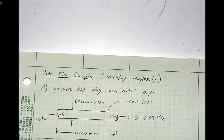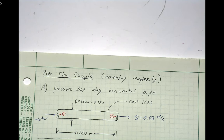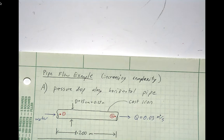This pipe flow example will be a five-step problem in increasing complexity. We're going to start as basic as possible here for the types of pipe flow analysis that we do, leading into more complicated cases after the initial steps. The first part is just to determine the pressure drop along a horizontal pipe.